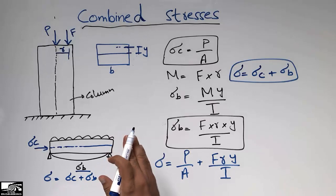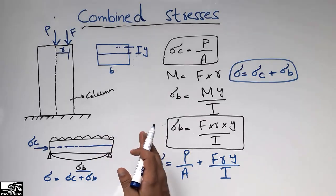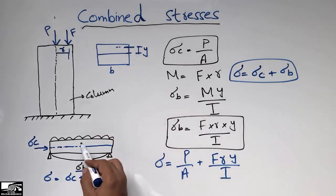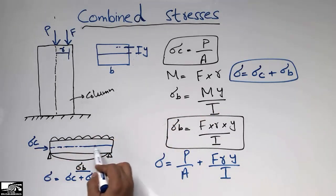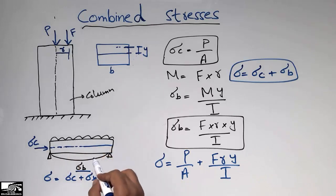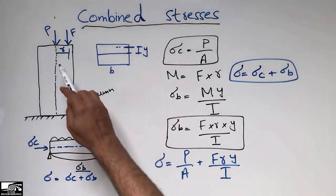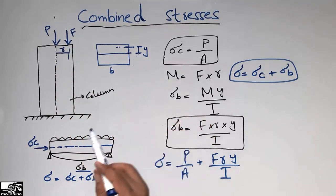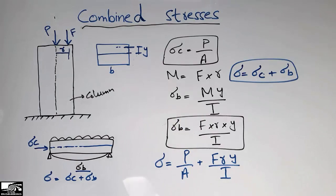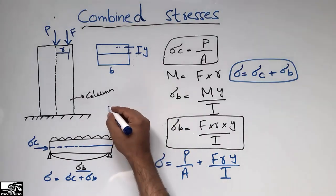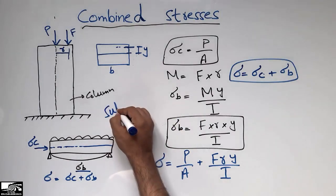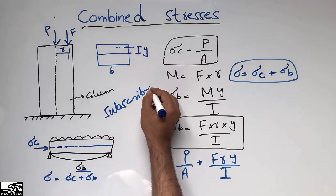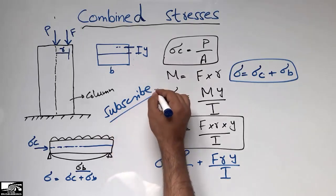We always have combined stresses on structural members — we don't have purely single stresses. However, we always have dominant conditions: in beams, bending stress is the dominant stress, and in columns, axial stress is the dominant stress. Hope you guys understand, and don't forget to subscribe to my channel for daily civil engineering videos. Thank you for watching.